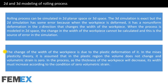The change in width of the workpiece is due to its plastic deformation. In the Mises plasticity theory, it is assumed that in the plastic region the volume does not change and volumetric strain is zero. In the process, as the thickness of the workpiece decreases, its width must increase according to the condition of zero volumetric strain.